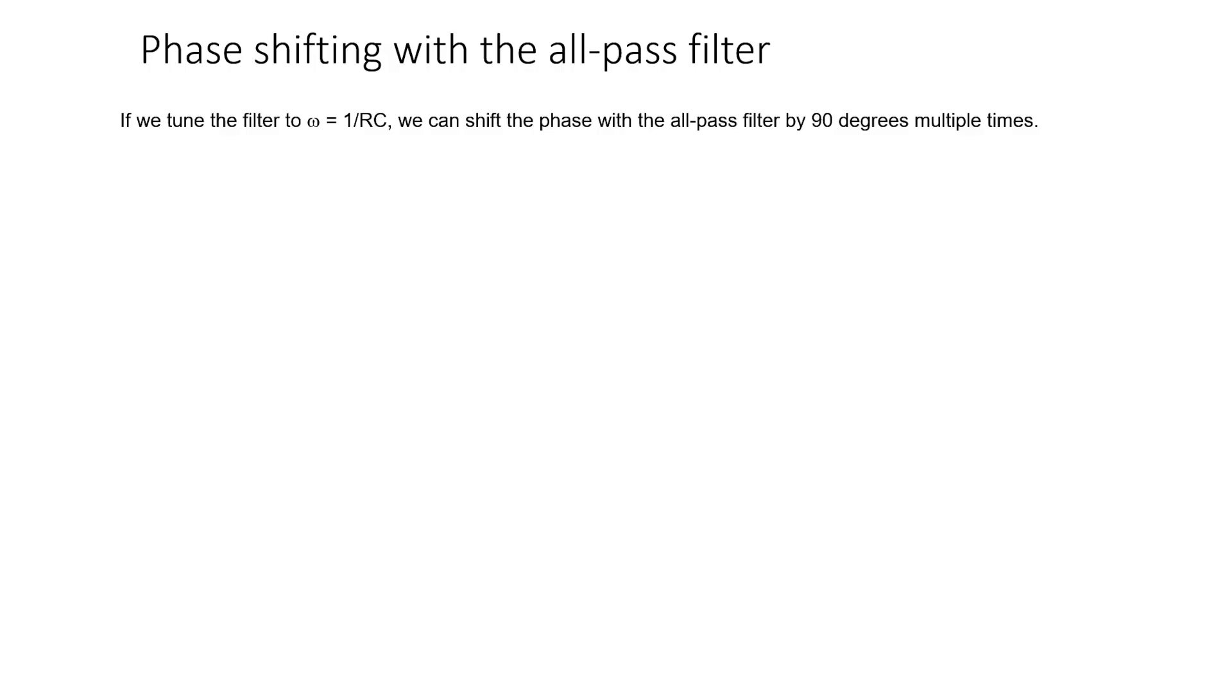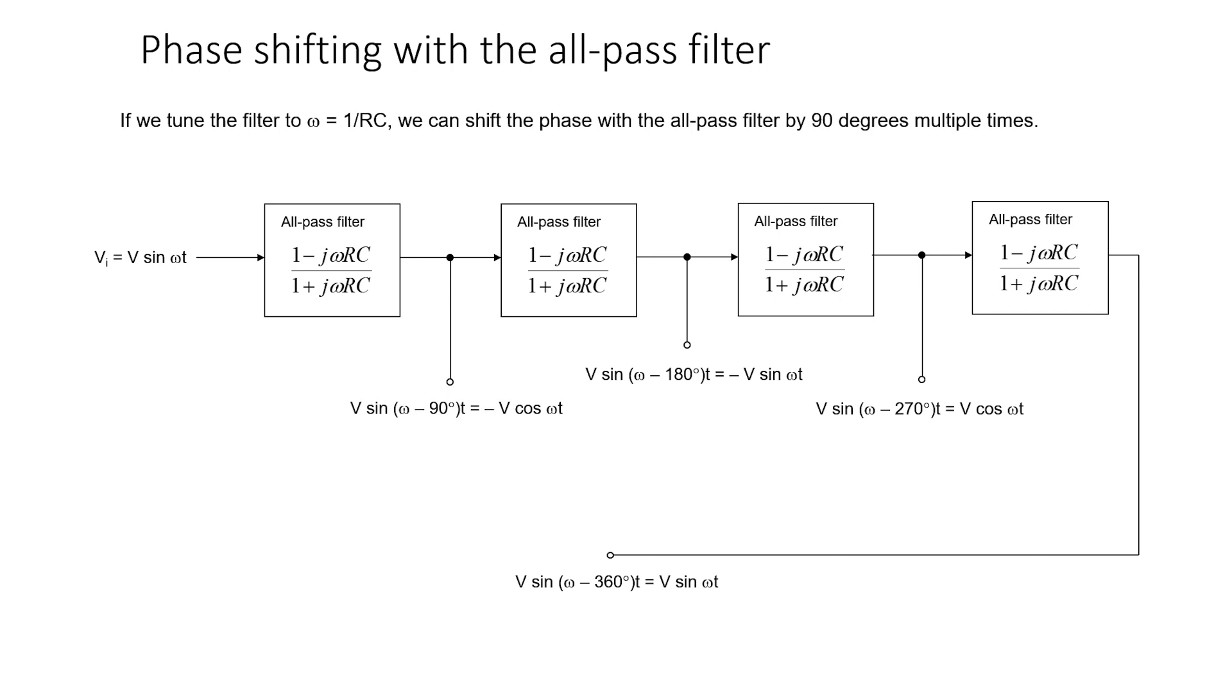It's an interesting filter, because if we tune it to a frequency of omega equals 1 over RC, then we can shift the phase using the all-pass filter by exactly 90 degrees every time we have a filter. Imagine that we have four such filters cascaded, and I feed a sinusoid into the input of the first filter.